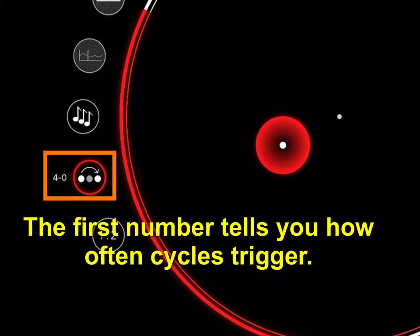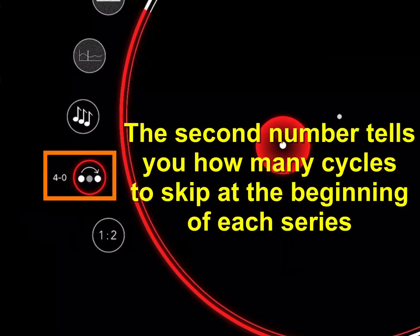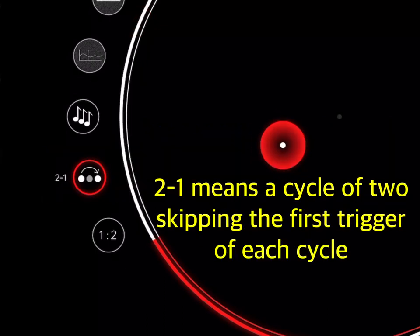The first number tells you how often cycles trigger. The second number tells you how many cycles to skip at the beginning of each series. 2-1 means a cycle of two, skipping the first trigger of each cycle.